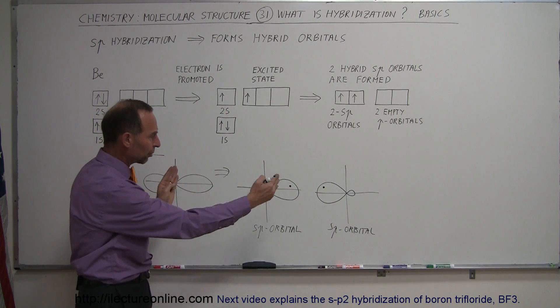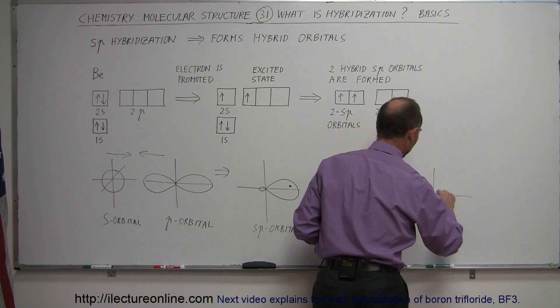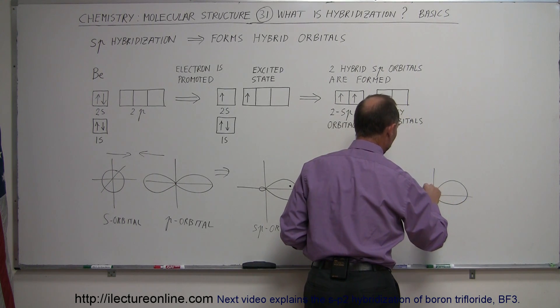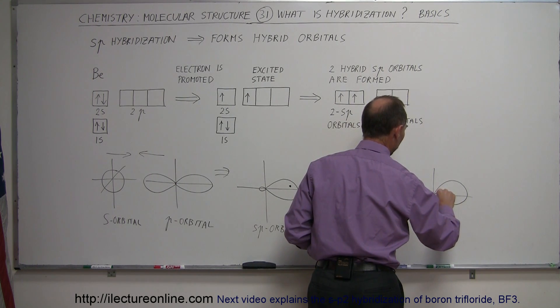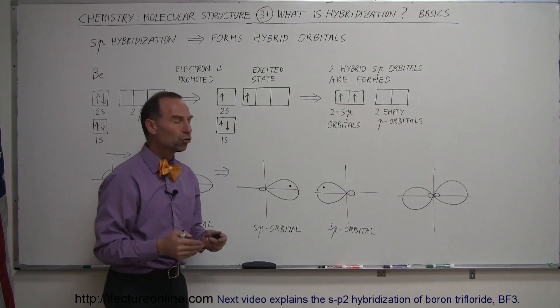So what happens then when those two sp orbitals come together in a single atom? It will look something like this. So we have one main lobe this way with a small lobe this way. We have one main lobe this way with a small lobe this way.